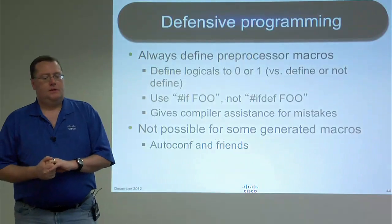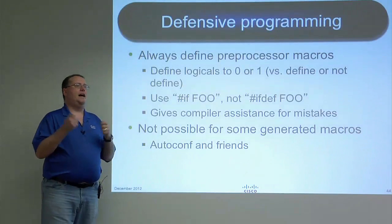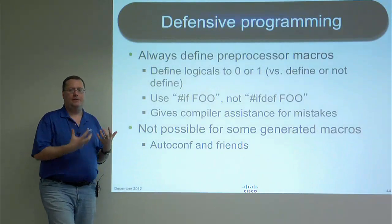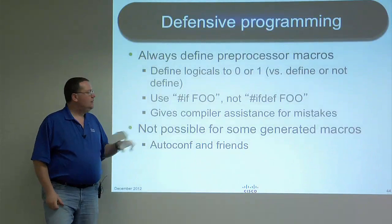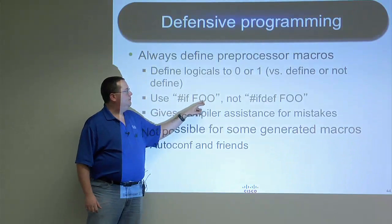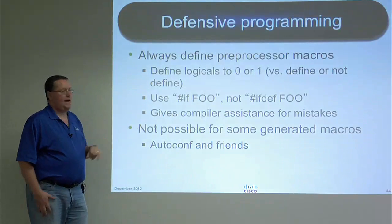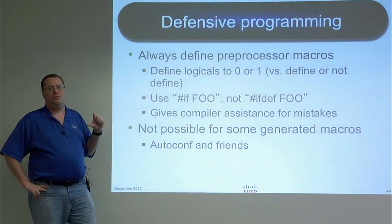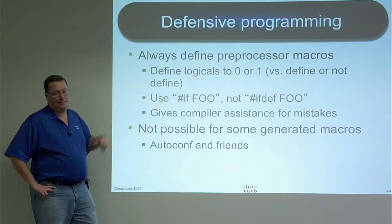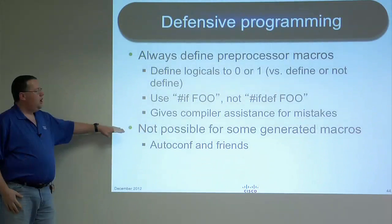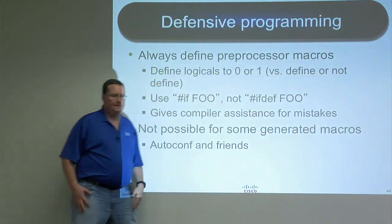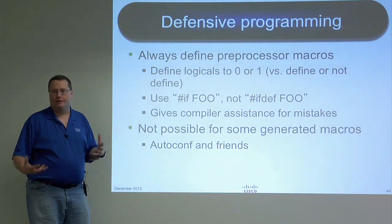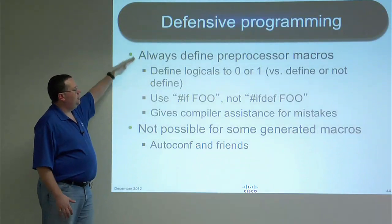More defensive programming: we always define macros to be zero or one rather than just defined or not defined. We prefer 'if (HAVE_FOO == 1)' over '#ifdef HAVE_FOO', because if you typo the macro name you'll get a compiler warning saying that macro doesn't exist. AutoConf unfortunately uses the ifdef/ifndef convention and we can't change that, but for our own macros we prefer the define-to-value style. Note that this has the same principle as the NULL == foo pattern — getting help from the compiler when you have typos.